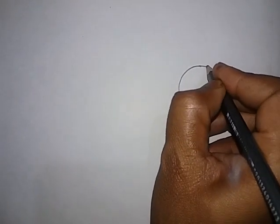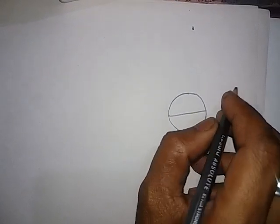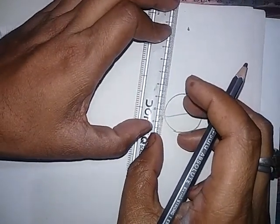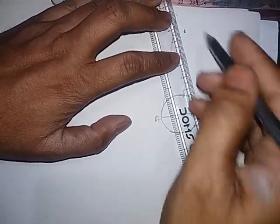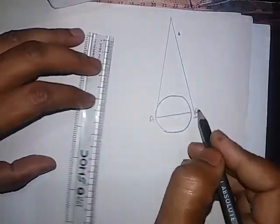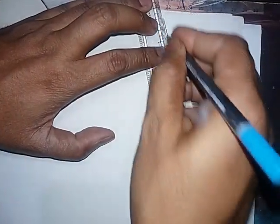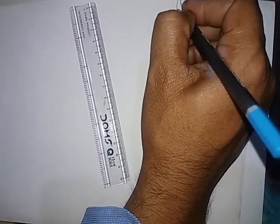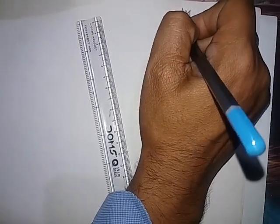This is our earth and this is the position of the moon. The moon is observed from two points A and B.